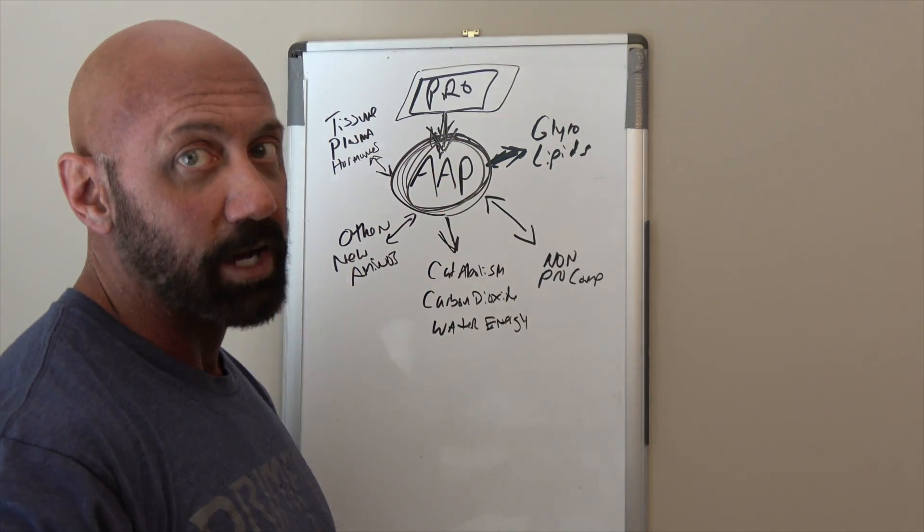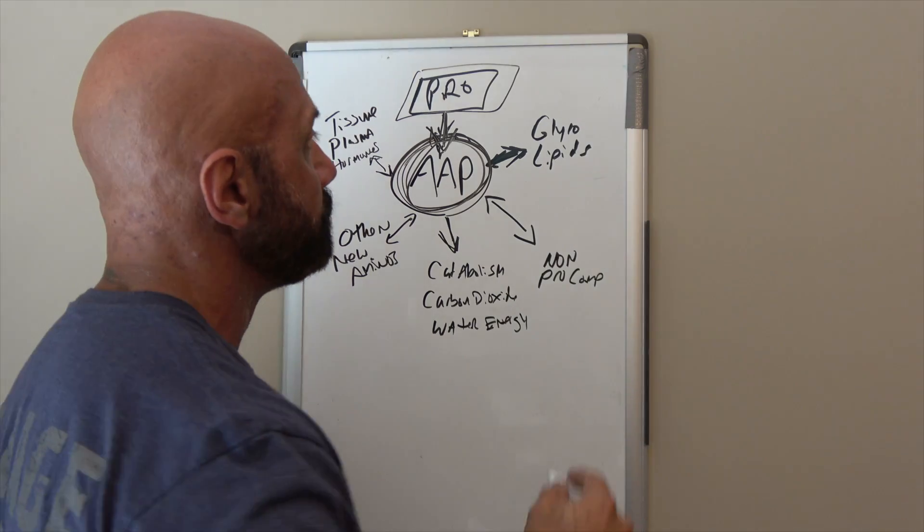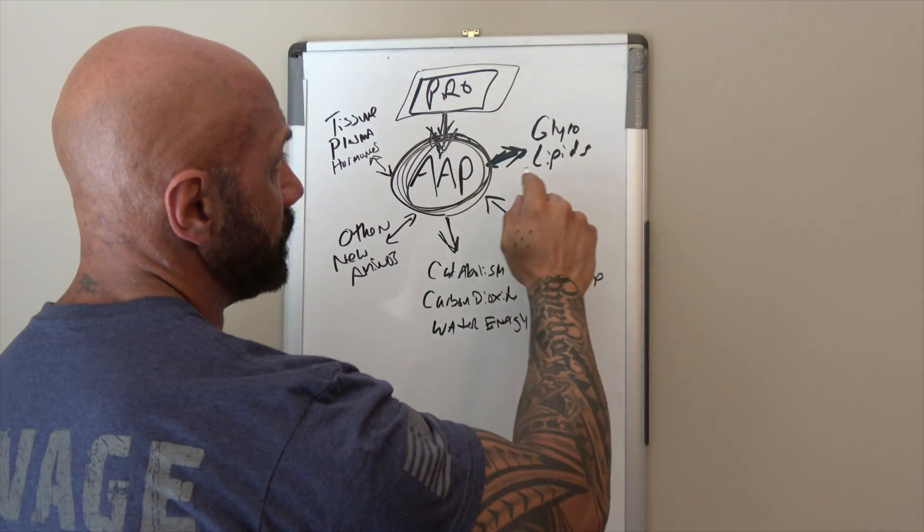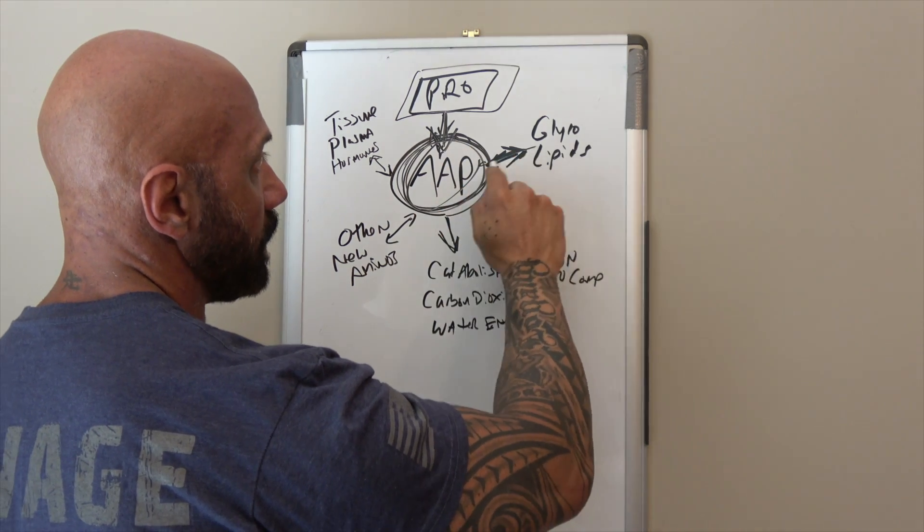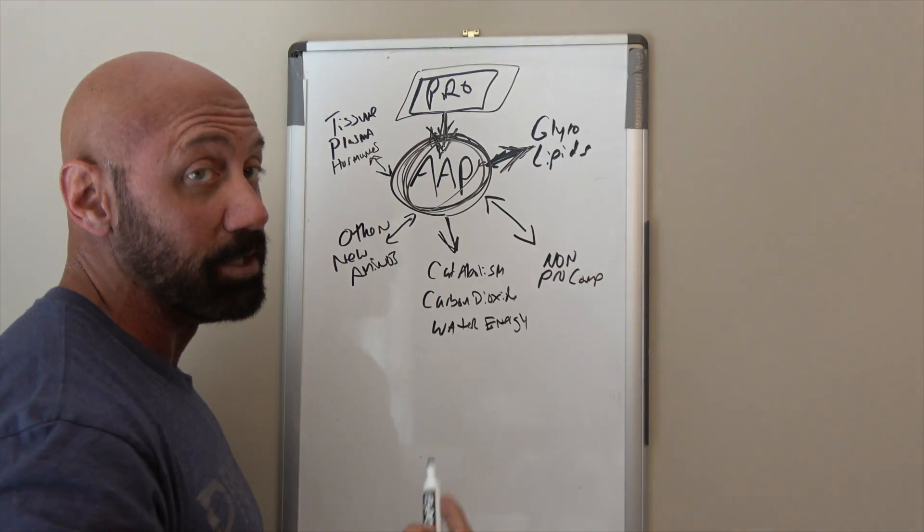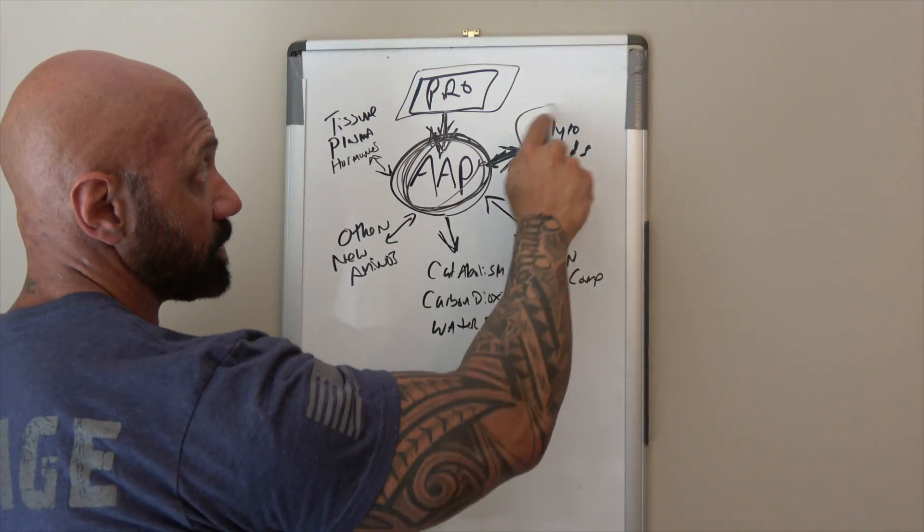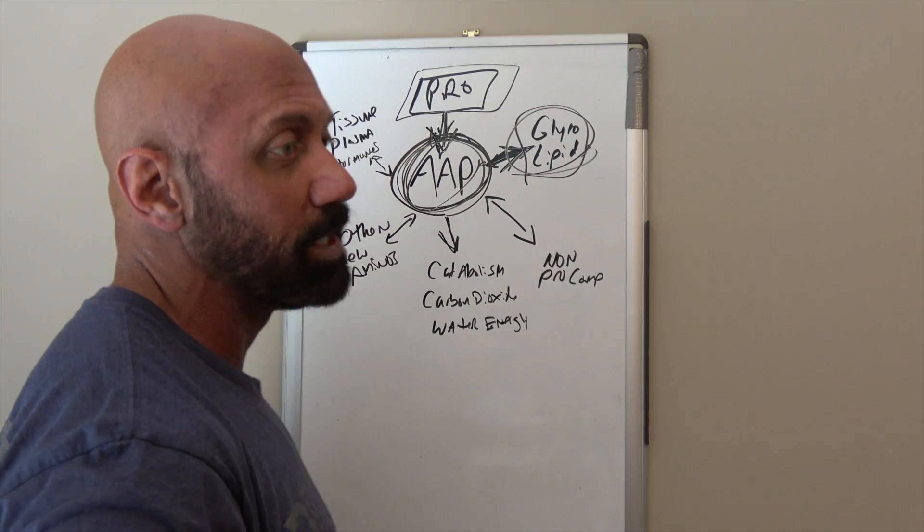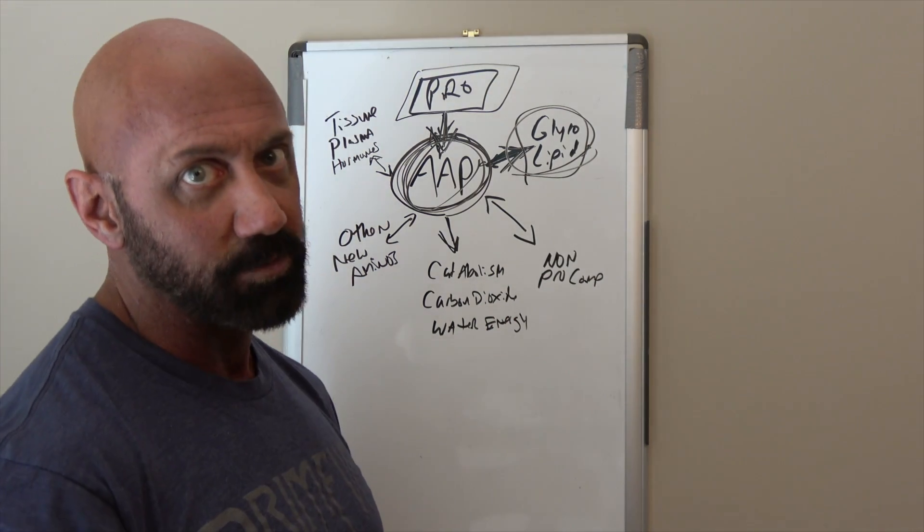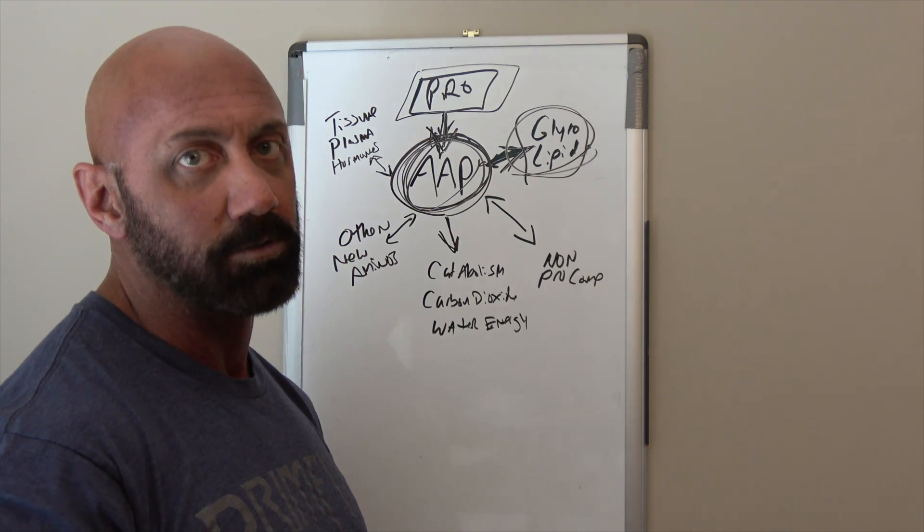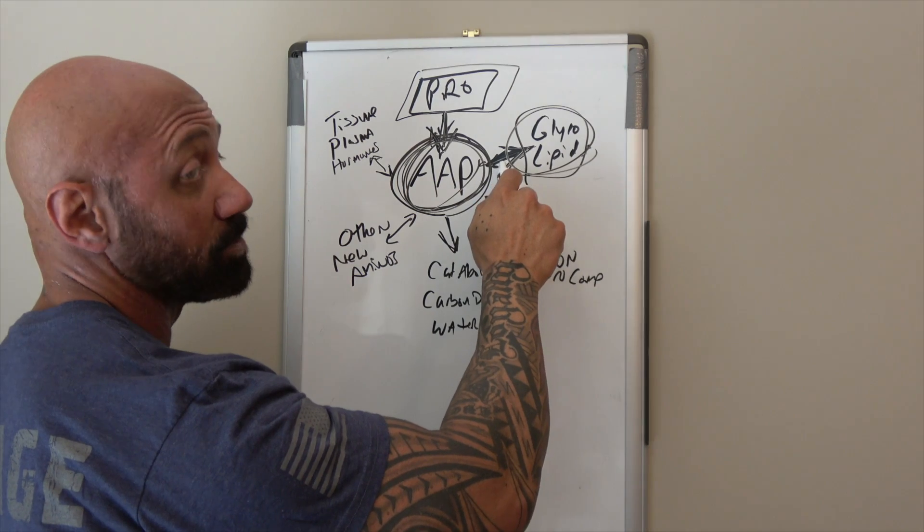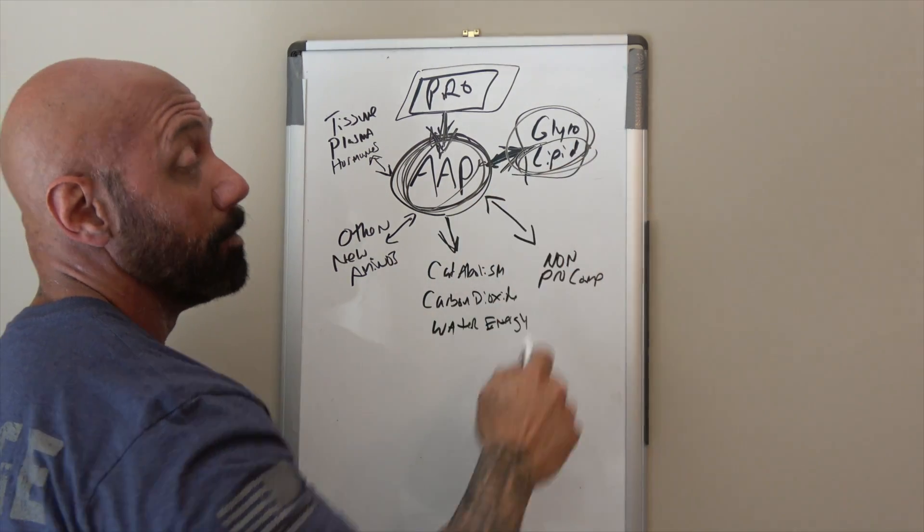Going clockwise: glycogen and lipids. Amino acids can be turned into glycogen and lipids, however glycogen and lipids cannot be turned into amino acids. So therefore this arrow only goes towards this direction. Basically your body can make glucose, or if you want to put it in more simple terms, carbohydrates, or it can actually store amino acids, extra amino acids, as lipids or body fat—something we never really want to do.